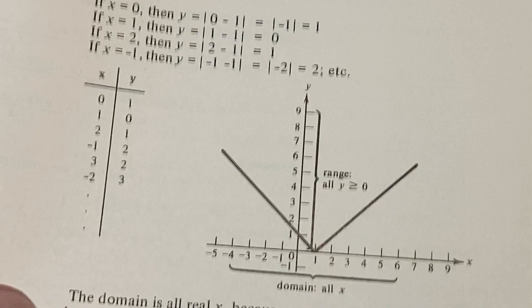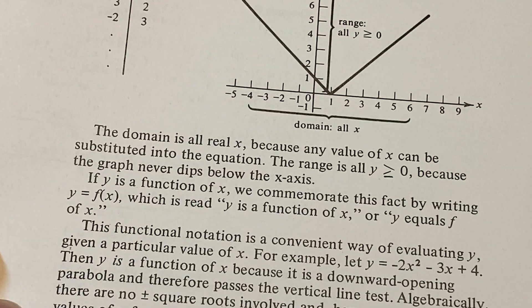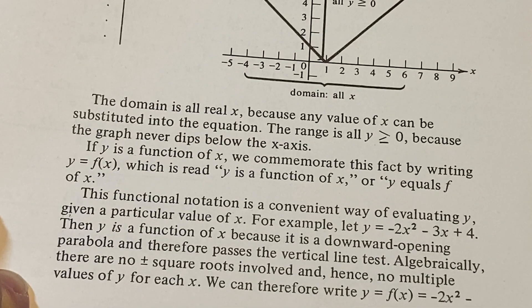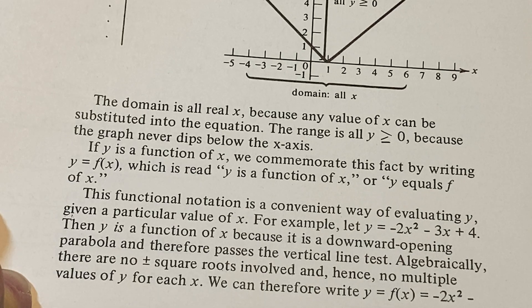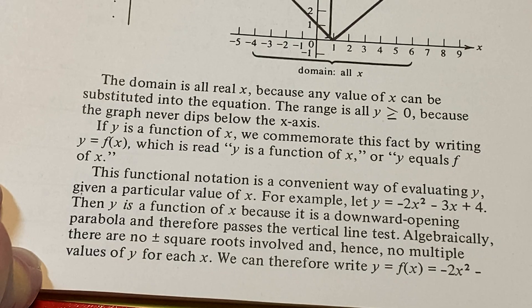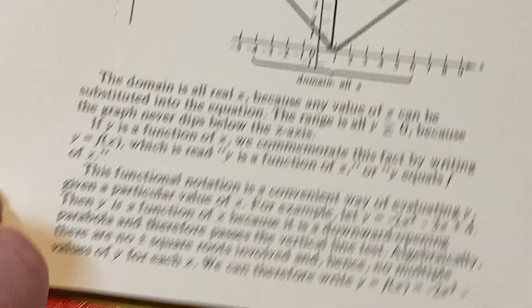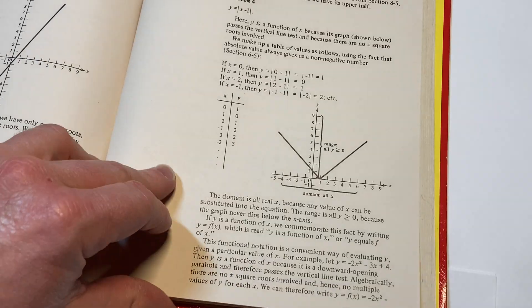Yeah. I remember that. I remember the moment I learned that, that the absolute value function looks like a V. It was a life-changing moment. Domain is all real X because any value of X can be substituted into the equation. The range is all Y greater than or equal to zero because the graph never gets below the X-axis. Yeah. Really nice. Good examples. Very good work.